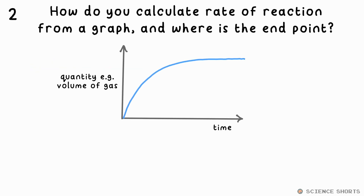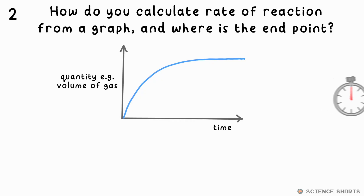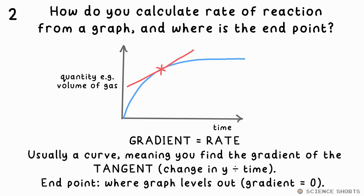Question 2. How do you calculate rate of reaction from a graph, and how can you find the time taken for the reaction to complete? The gradient of this graph gives you the rate. As this line is usually a curve, you might have to draw a tangent at a certain time and find its gradient. It's calculated by change in y divided by change in x — any rate is change in something divided by time, so it's whatever's on the y-axis divided by time.